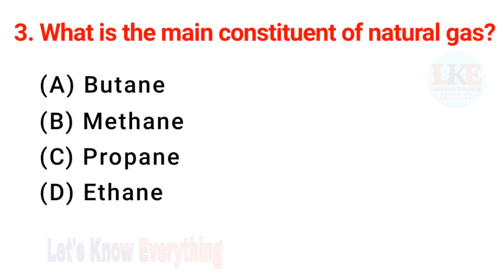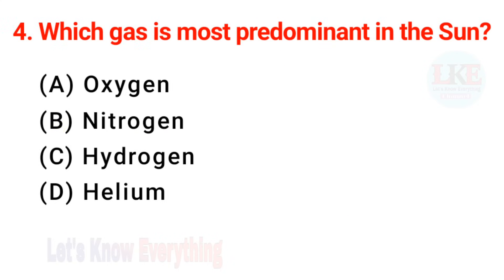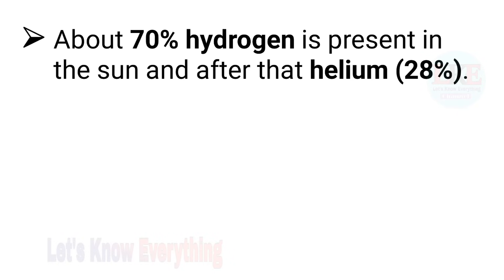Question number 3: what is the main constituent of natural gas? Right answer option B — methane, symbol is CH4. Question number 4: which gas is most predominant in the sun? Right answer option C — hydrogen. About 70% hydrogen is present in the sun, and after that helium, 28%.